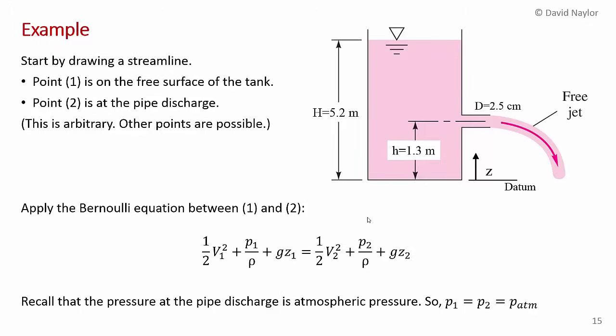You always start any Bernoulli analysis by drawing a hypothetical streamline. It doesn't have to be perfect, but for example, I could imagine a particle of fluid being drawn down from the surface and then eventually discharging from the nozzle. So start by drawing a streamline. That's important. So point one here is at the free surface and point two is at the discharge from the pipe, right at the very discharge.